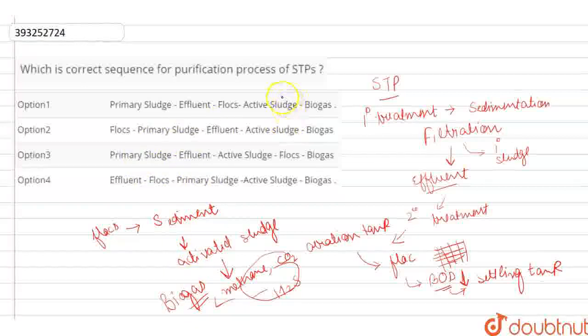What will happen in the steps? Option 1 is primary sludge, effluent, flocs, and biogas. So, the first option is the correct option. Primary sludge is removed first, then effluent, flocs, activated sludge, and then biogas. So first is the correct option.